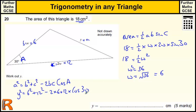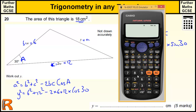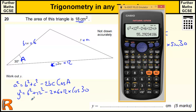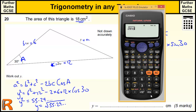We know sine of 30 was a half, so cos of 30 is root 3 over 2 — but we can use the calculator for all of that on a calculator test. So 6 squared plus 12 squared minus 2 times 6 times 12 times cos(30) equals 55.29... So Y is the square root of that. I've left that in the calculator, so I just take the square root of the answer, which gives 7.435.